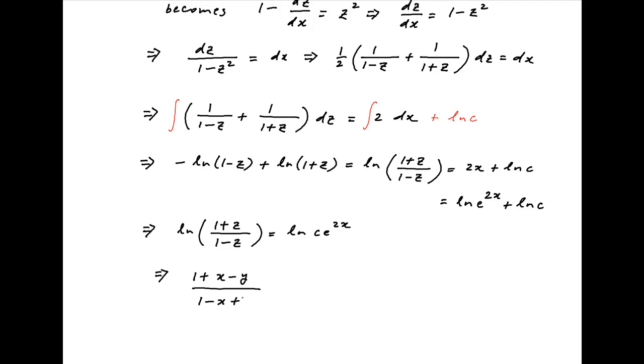Replacing z with x minus y, we get (1 plus x minus y) divided by (1 minus x plus y) is equal to c times e raised to the power 2x.